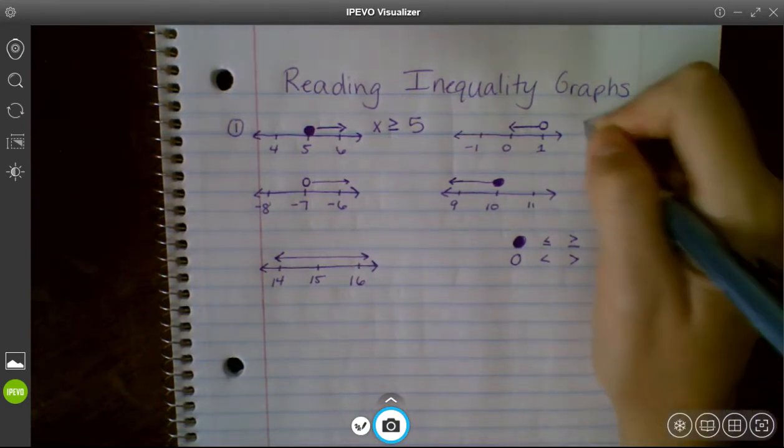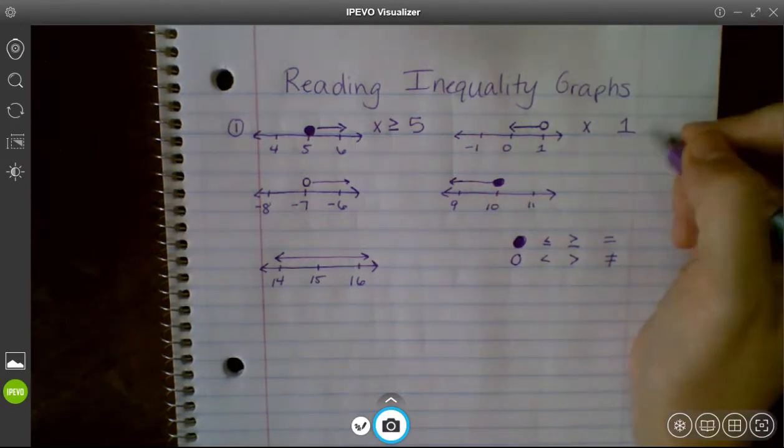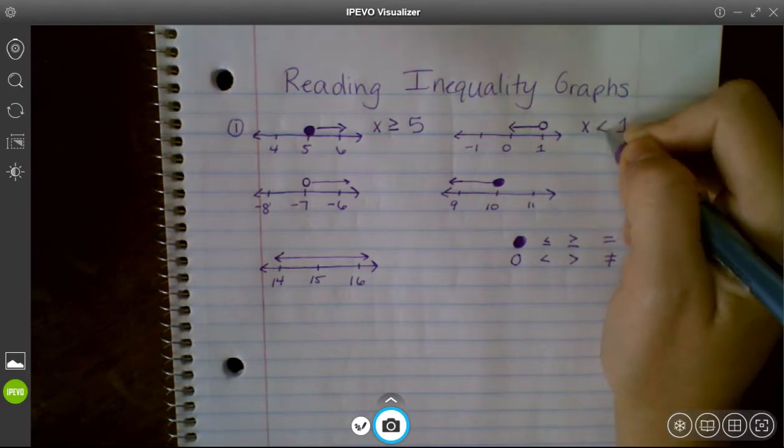So my second one, I have an open circle, so x, 1, I'm not going to have an equal to line, and then 0 is smaller than 1, so x is less than 1.